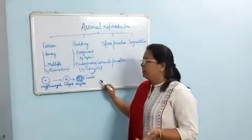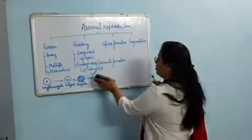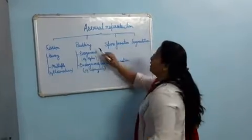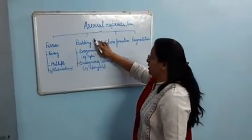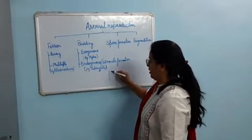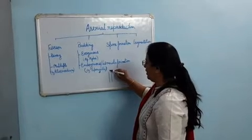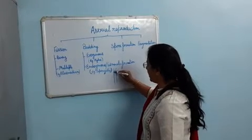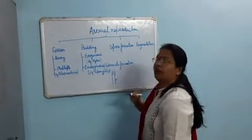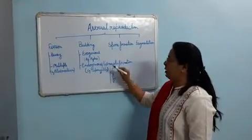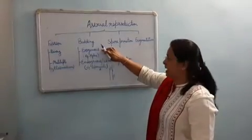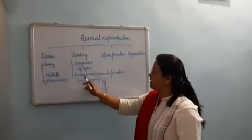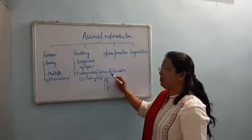This is the mode of multiple fission. Now we come to another mode of reproduction — budding. A bud is an outgrowth from the body of the parent. Take the example of Hydra: from the body of the parent, an outgrowth arises that is known as a bud. This bud may come from the body of the parent, which is exogenous budding, or it may develop inside the body of the parent, which is known as endogenous budding, commonly called gemmule formation.